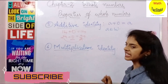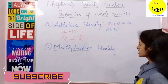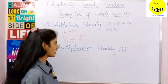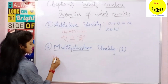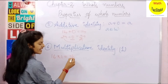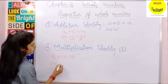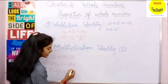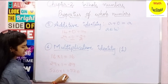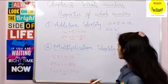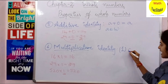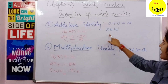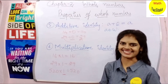Now let us see what is multiplicative identity. The multiplicative identity is 1. Suppose you multiply 1 with any number — 16 into 1 gives 16, 29 into 1 gives 29, 520 into 1 gives 520. So 1 multiplied by any number gives you the same number. You can write A into 1 equals A. Here 1 is called multiplicative identity, and 0 is called additive identity.